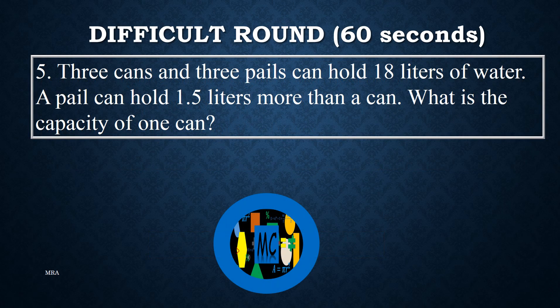Problem 5: Three cans and three pails can hold 18 liters of water. A pail can hold 1.5 liters more than a can. What is the capacity of one can?